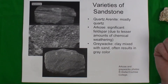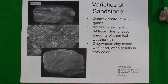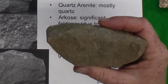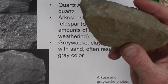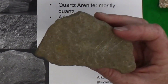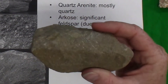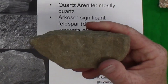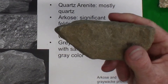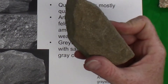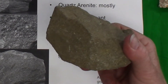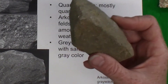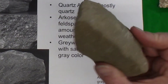Another type of sandstone is called graywacke. It tends to be a grayish color, and there is a significant amount of clay particles mixed in with the sand, even though it is predominantly sand-sized.